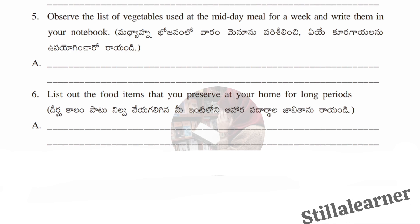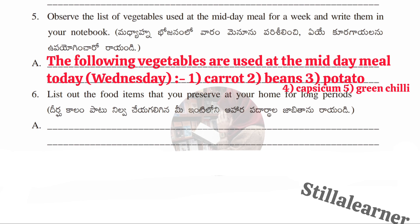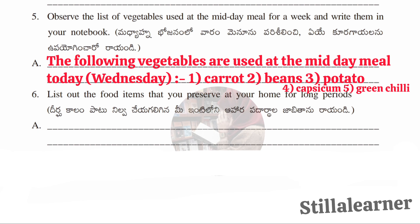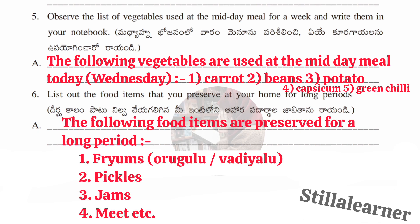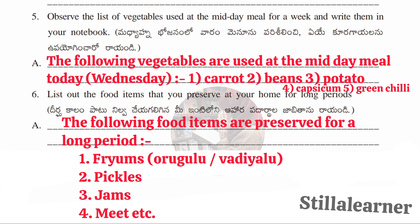Fifth question: observe the list of vegetables used at midday meals for a week and write them in your notebook. Answer: the following vegetables are used at midday meals — carrot, beans, potato, capsicum, and green chilies. Sixth question: list food items preserved at home for a long period. Answer: fryams (orgulu/vadiyalu), pickles, jam, and meat.